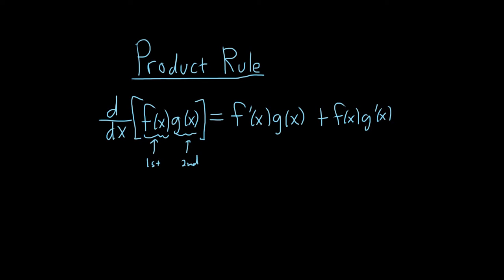Let's do a problem so you can see how it works. I'll use a different letter besides f and g for my function. Let's say h(x) is equal to x to the fourth times sine x. We'll find the derivative of this function using the Product Rule. You can think of x⁴ as your first function and sine x as your second function.